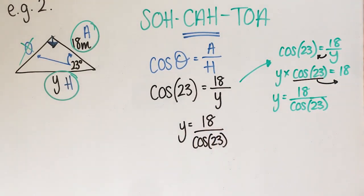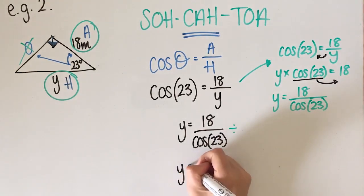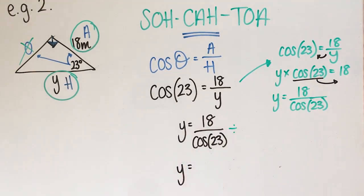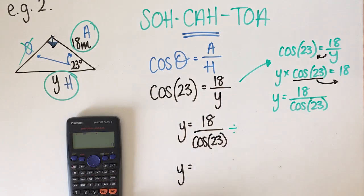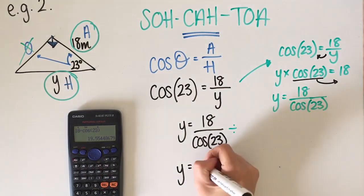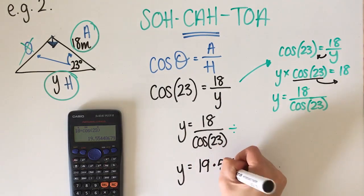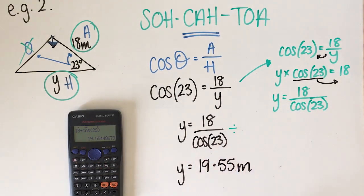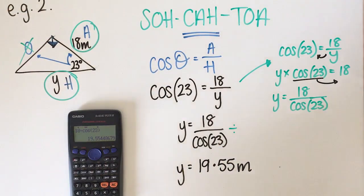When something is over, that means divided by. On my calculator I type 18 divided by cos(23) — make sure you close that bracket, otherwise it can give you the wrong answer. That gives us 19.55 metres. That makes sense because this is our hypotenuse and it needs to be longer than our shorter side.